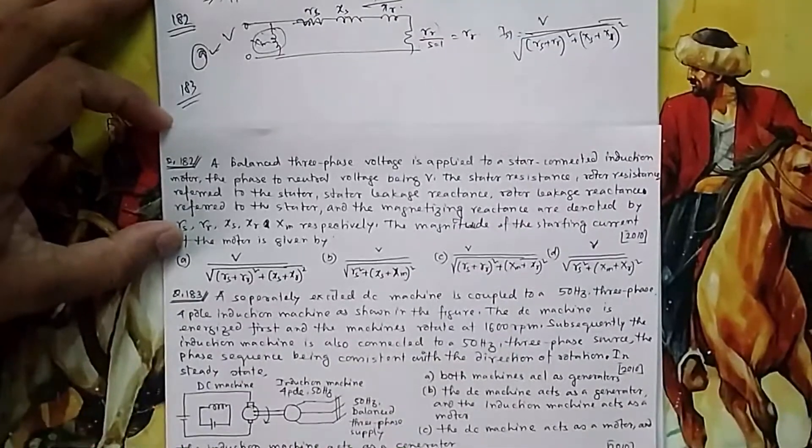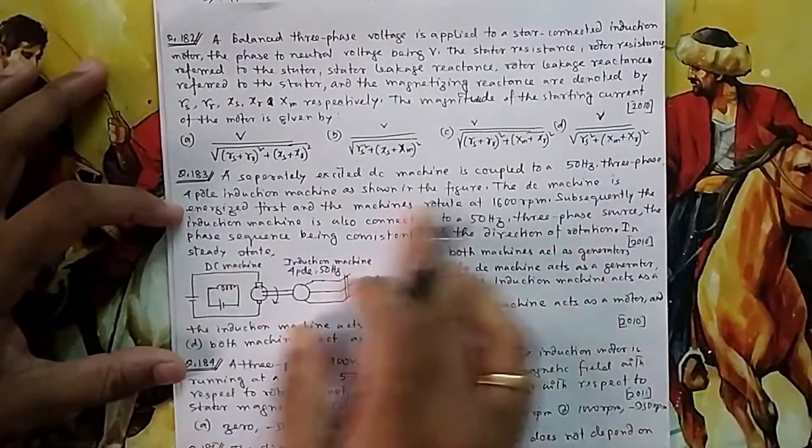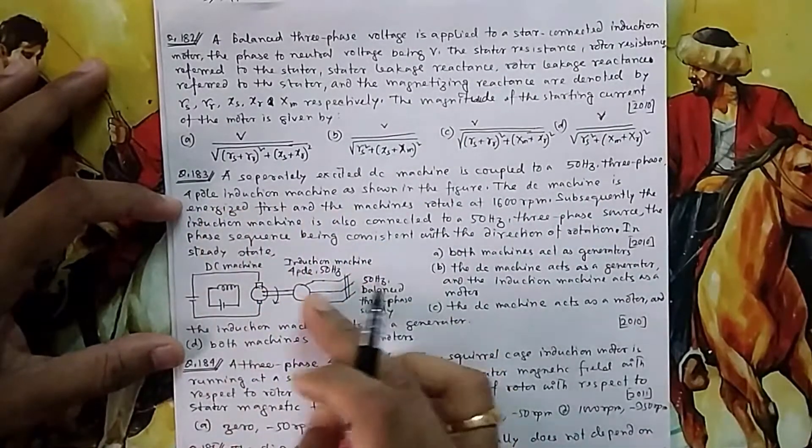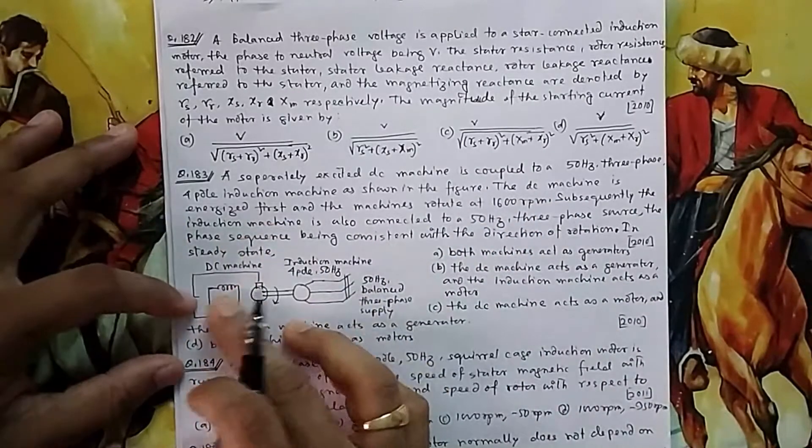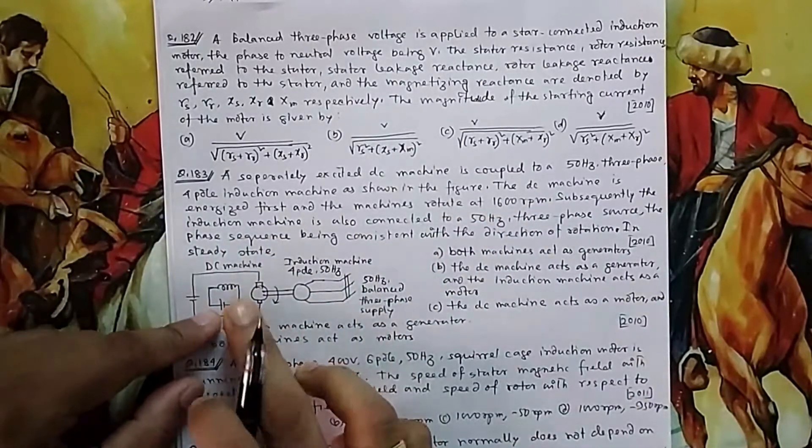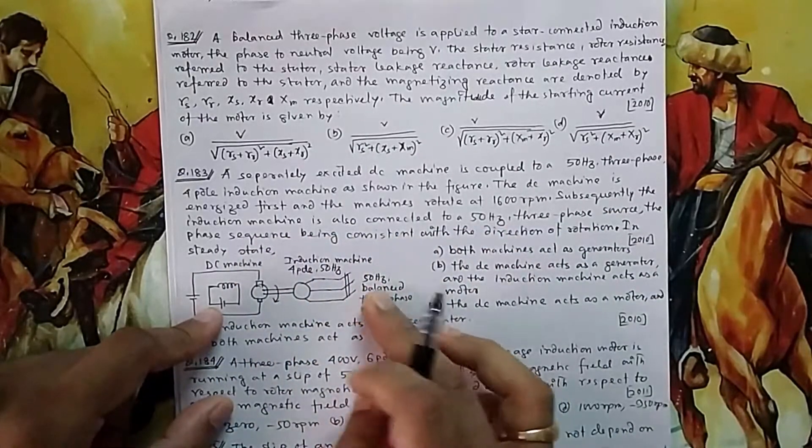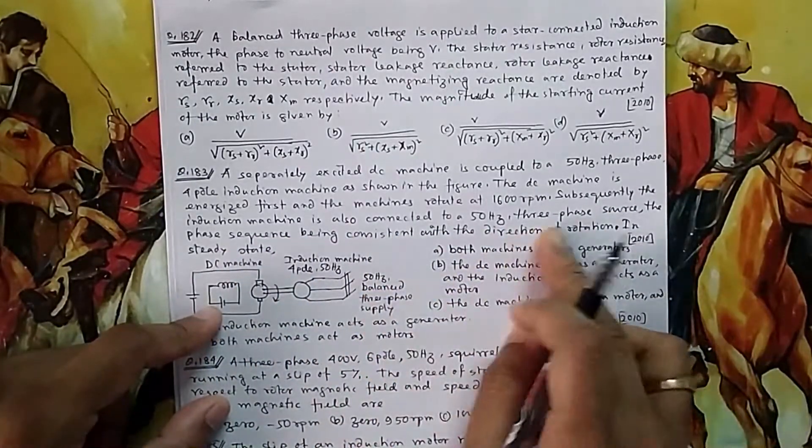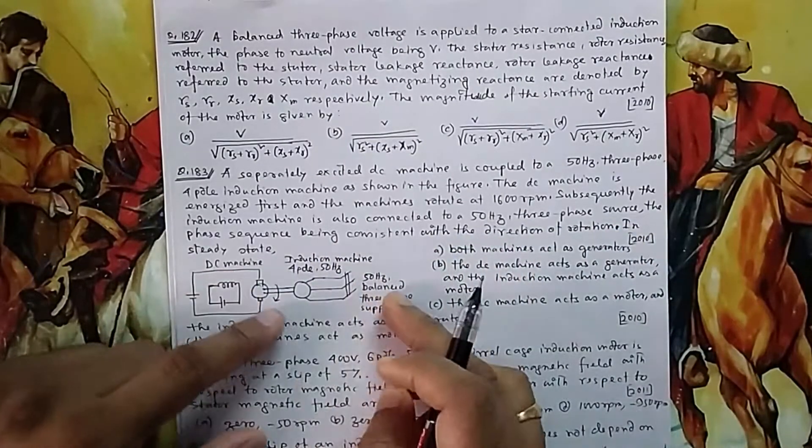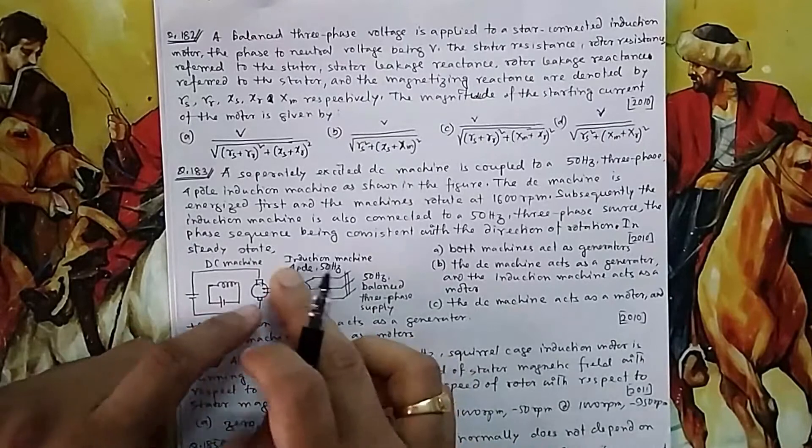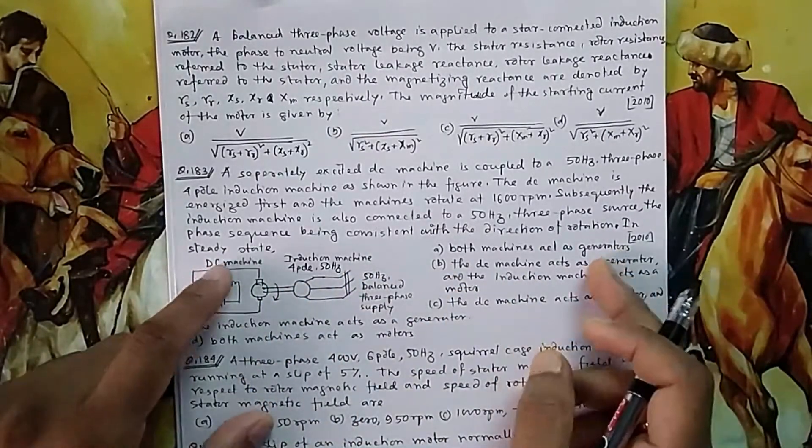Question 183: A separately excited DC machine is coupled with a 50 Hz, 3-phase, 4-pole induction machine. The DC machine is energized first and the machine is rotating at 1600 RPM. Subsequently, the induction machine is also connected to 50 Hz balanced supply. The phase sequence is consistent with the direction of rotation. In steady state, which will act as generator, which as motor?